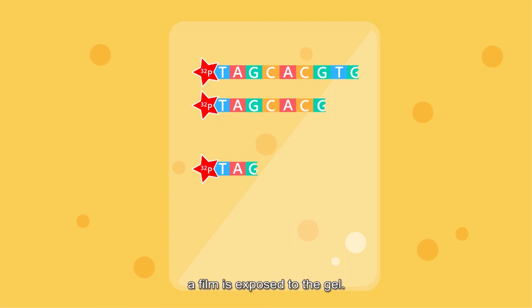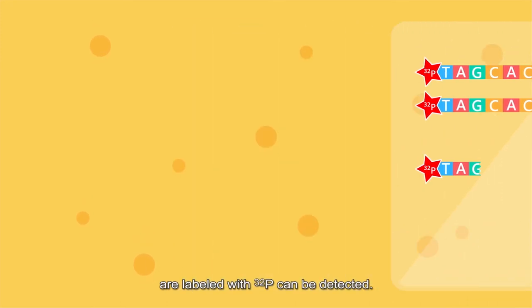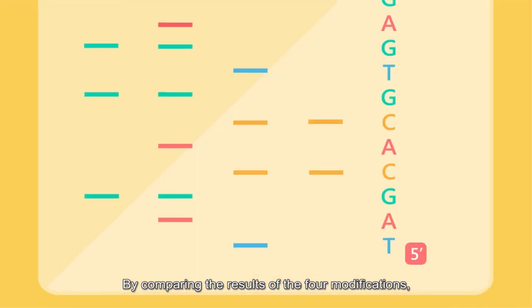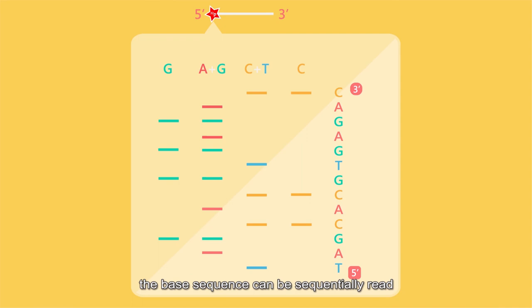a film is exposed to the gel. Only the fragments which start from the five prime ends and are labeled with phosphorus-32 can be detected. By comparing the results of the four modifications, the base sequence can be sequentially read from gel bottom to top.